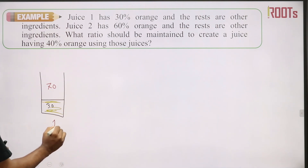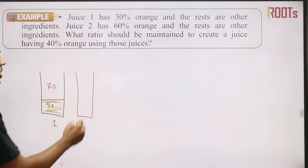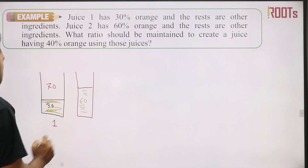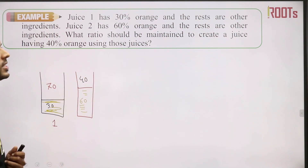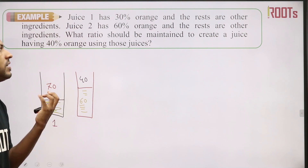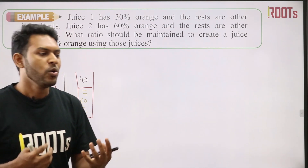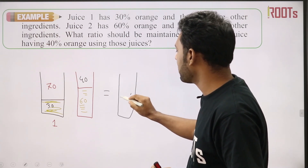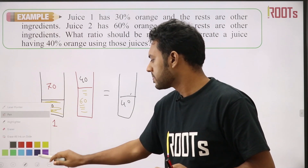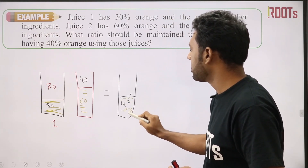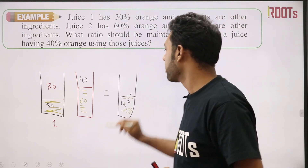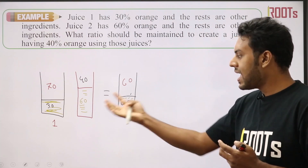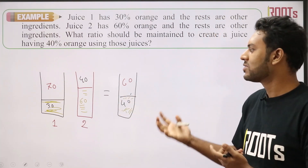What ratio should be maintained to create a juice having 40% orange using those two juices? The target is 40% orange and the rest is 60%. Using the spider method: Juice 1 is 30%, Juice 2 is 60%, target is 40%.